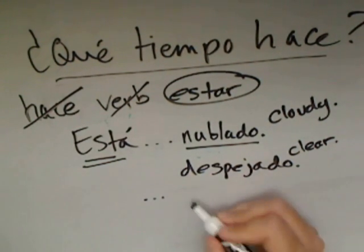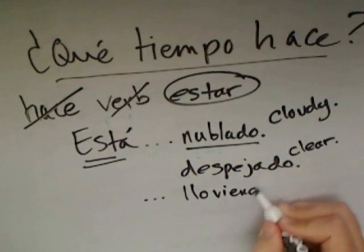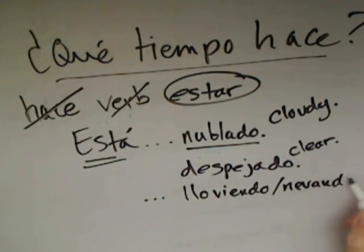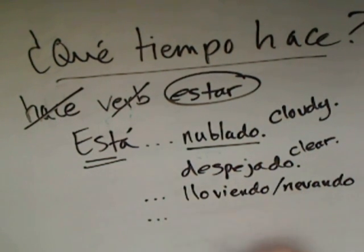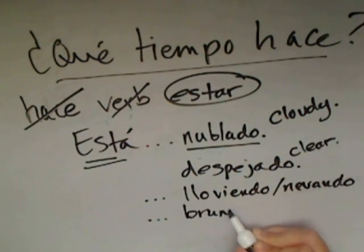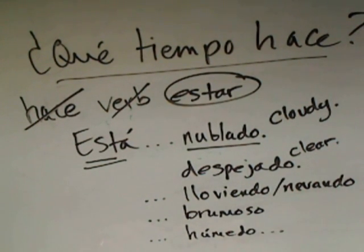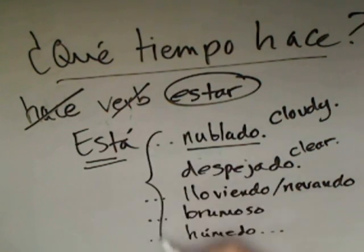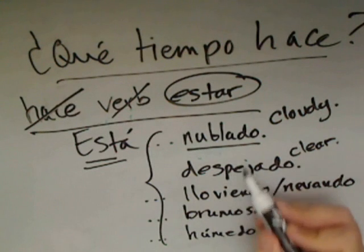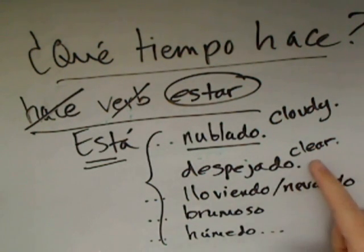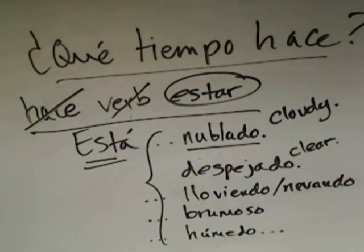We can also use está with lloviendo or nevando — raining or snowing. It might be foggy out — está brumoso, one way to say it's foggy or misty. And está húmedo — it's humid. So we're adding a lot of vocabulary in this lesson, but remember some of it goes better with one of these particular options. These ones work with está: está nublado, está despejado, está lloviendo, está nevando, está brumoso, está húmedo.